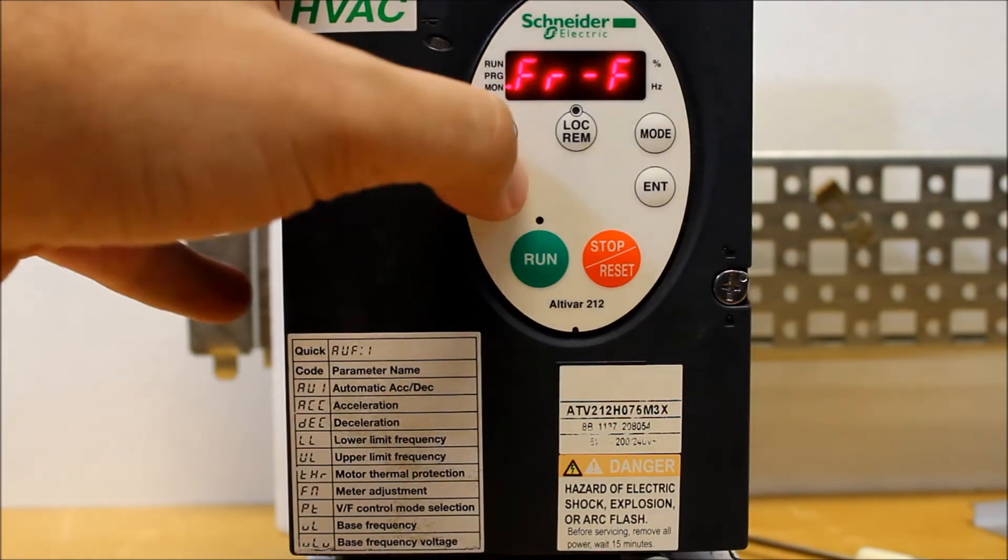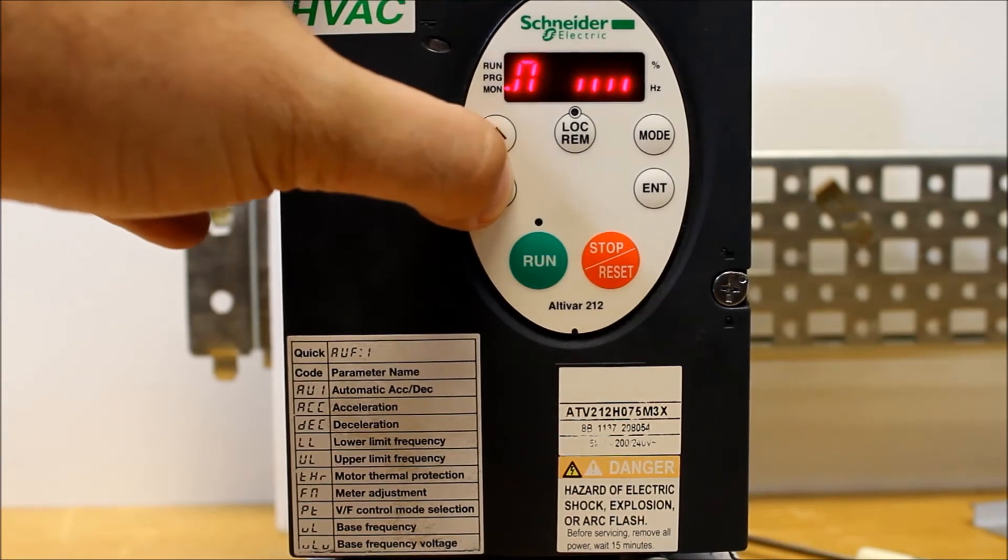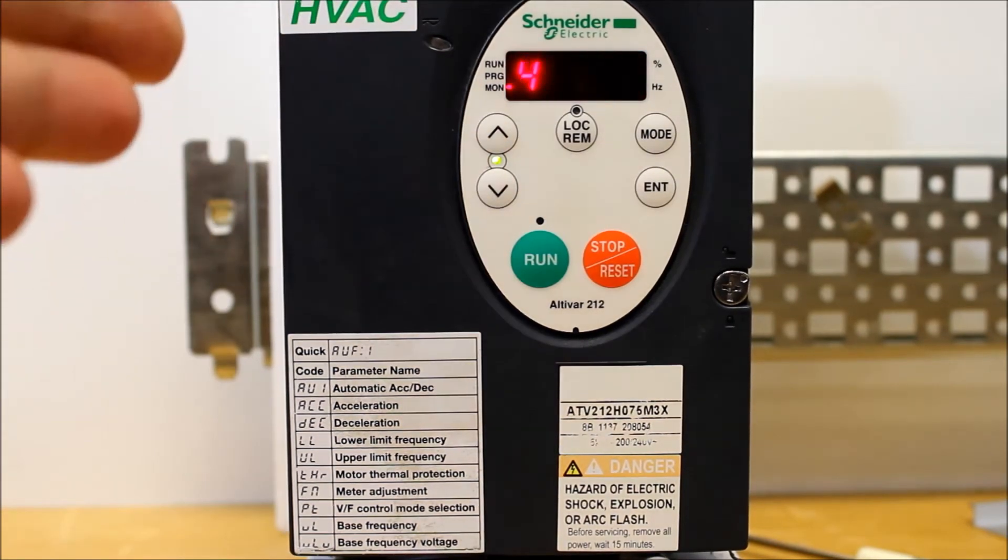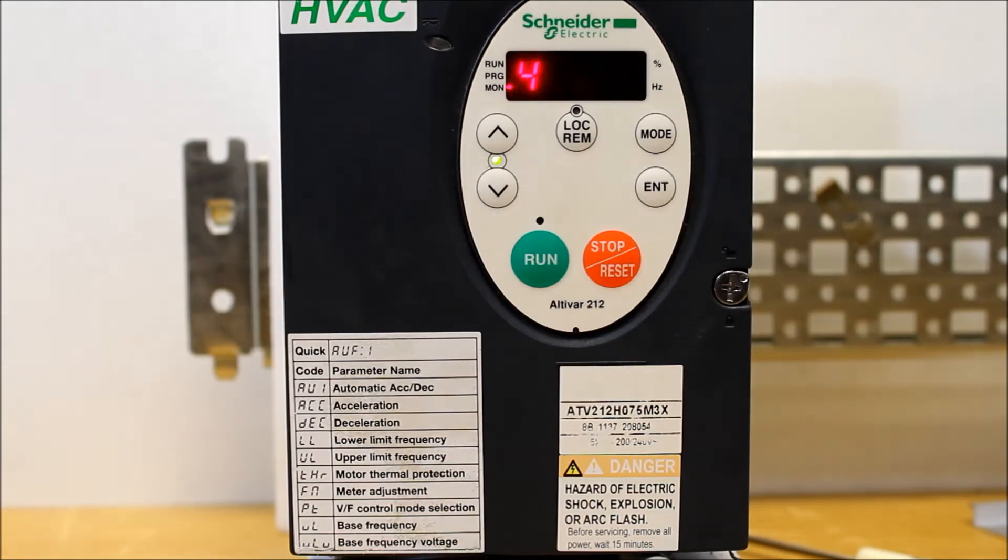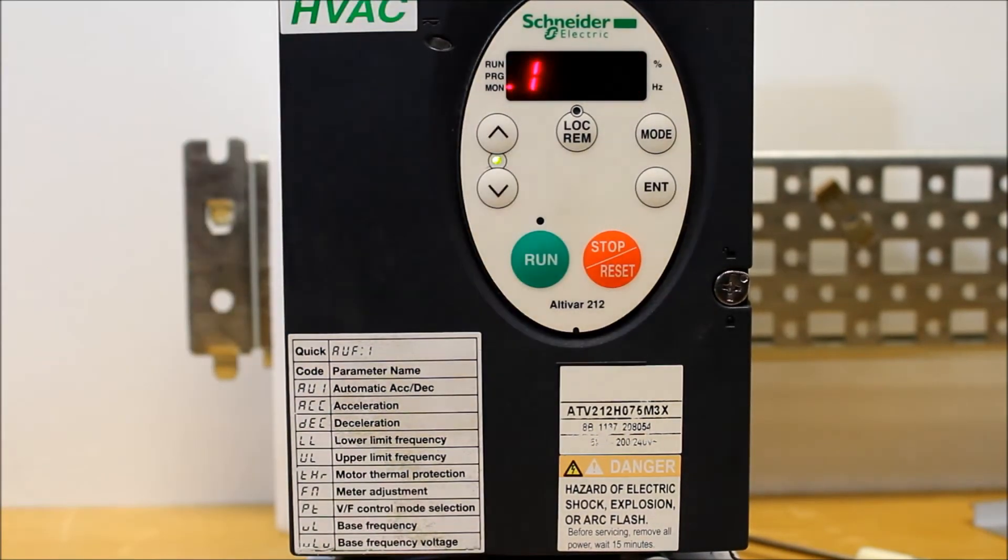Once you see that, you arrow down, and you'll see a number flashing and a fault code. You notice this is 4 and error 9, and if I go down, it says 3, 2, 1, and so on and so forth.